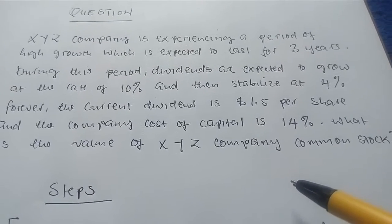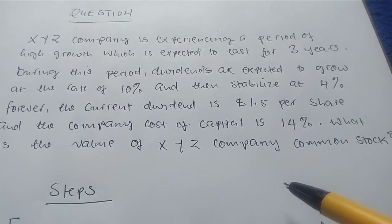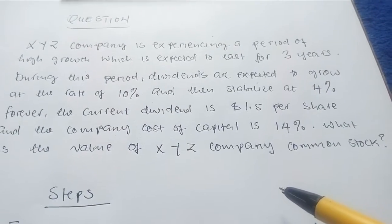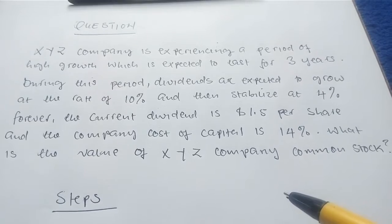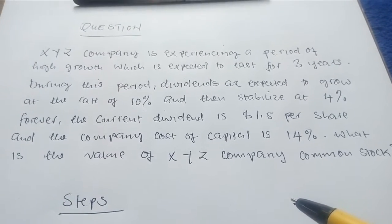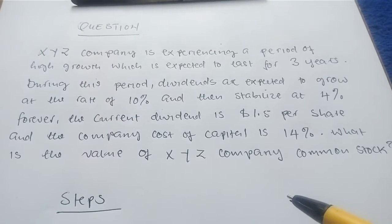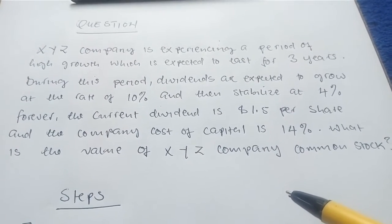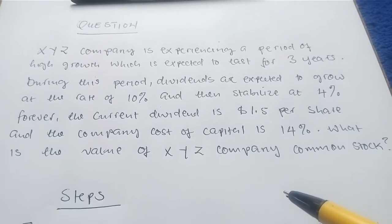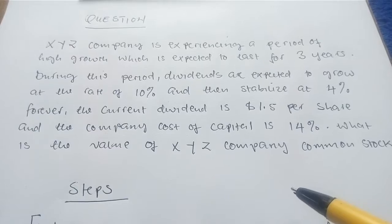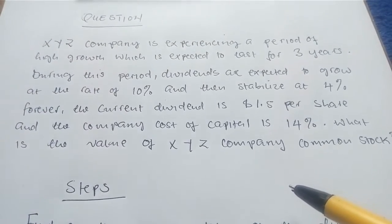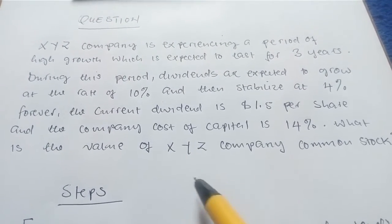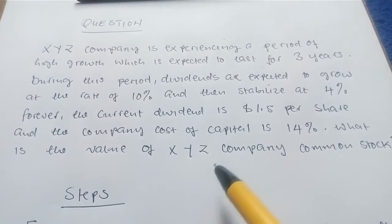Hello everyone, welcome to Finance with Medicine. In today's video we're going to look at how to calculate the cost of a common stock which is experiencing a varying dividend growth rate. Common stock has several characteristics, among these is dividend variation. If the company records good profits, we expect it to make adjustments to the dividend declared that year, and if it makes a loss, adjustments are also made.